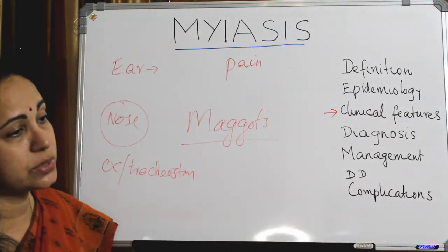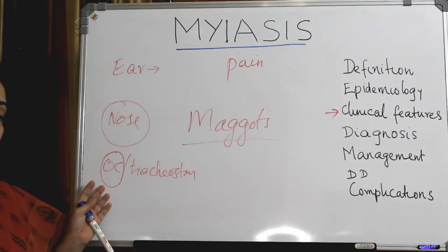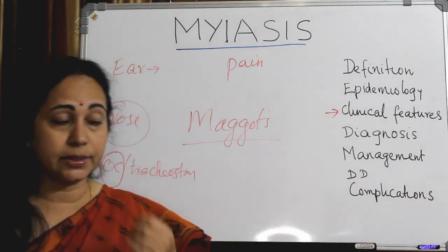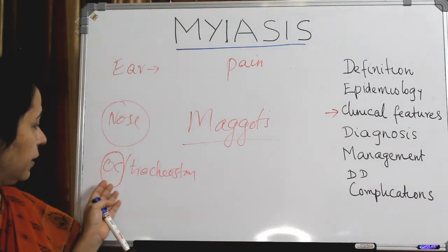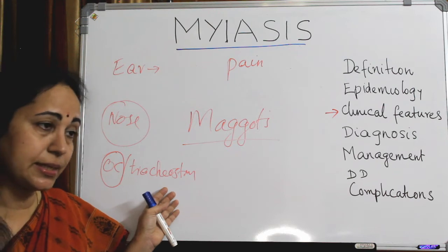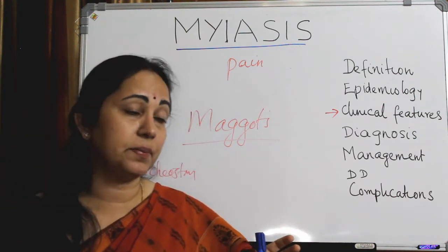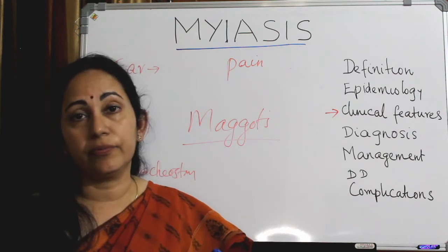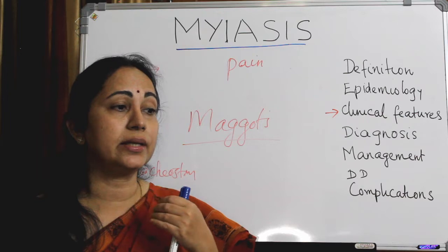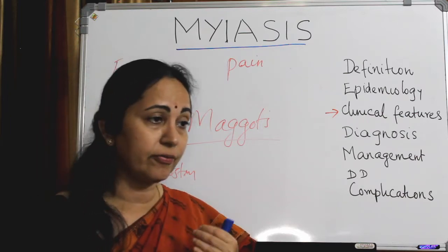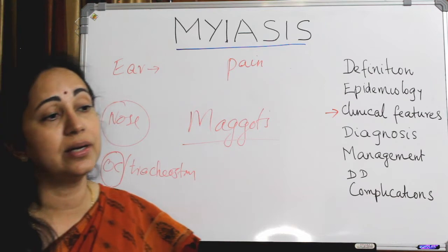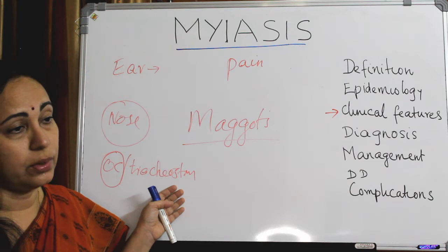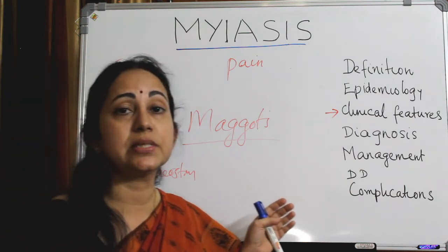In the oral cavity, there will be pain and palatal perforations, plus dental or gum infections. In the tracheostomy site, debilitated patients will complain of severe pain and cough, because the larva can irritate and migrate inside, causing laryngospasm, aspiration, aspiration pneumonia, sudden death, and signs of septicemia.